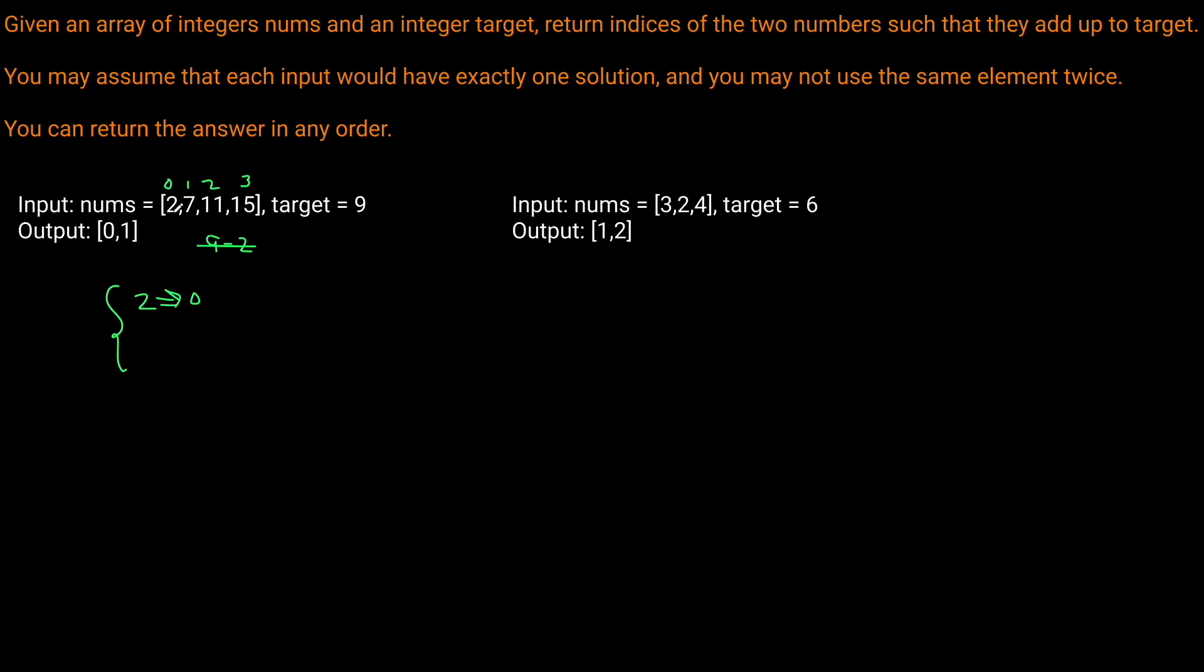So now we can continue with our iteration. So now we're here at the 7. So now we say, okay, have we seen 9 minus 7? And is this in our dictionary? Yes, it is. We've seen the 2 before, and it was at the zeroth index, which means that we can return the index that the 7 is at and the index that we saw the 2 at. So our solution would be either one, zero, or we could return because order doesn't matter, zero, one. Right? So that's how we're going to solve it.